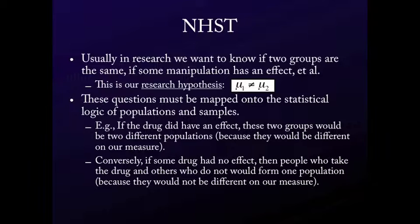However, these questions have to be mapped onto the statistical logic of populations and samples. The statistics constrain the way that we can ask and analyze this question, which is why we have to go through this convoluted logic of null hypothesis testing. So if the drug does have an effect, these groups would represent two different populations. Conversely, if the drug has no effect, then people that take the drug and those that do not only form one population because they're not different.